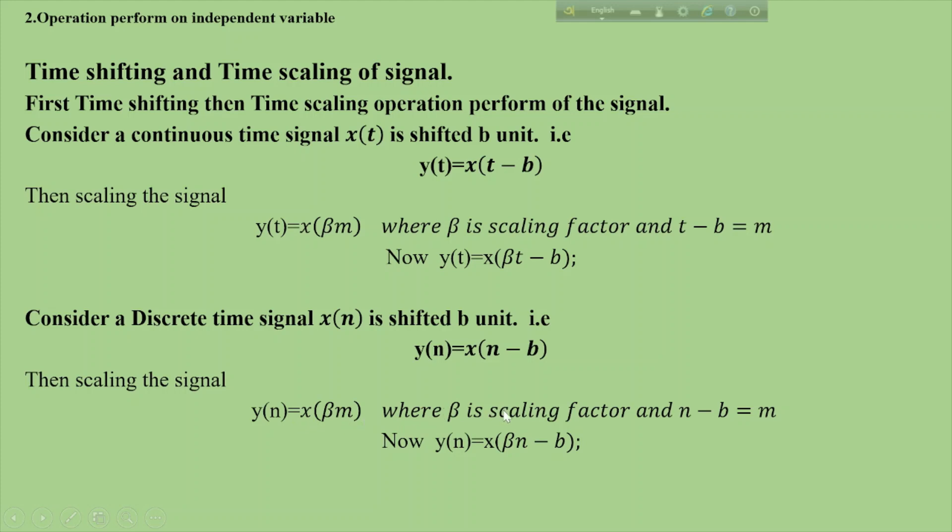For discrete time signals, where β is the scaling factor and n minus b equals m, we get y(n) equals x(β(n - b)).